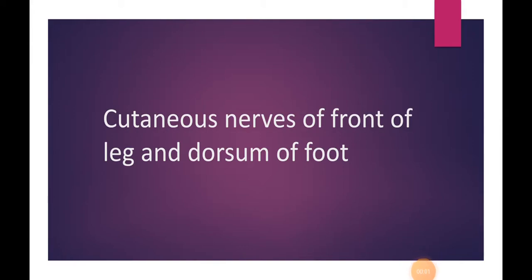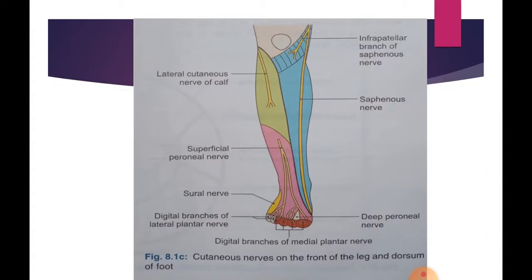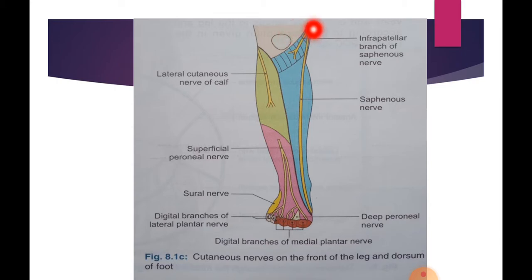Today's video is about the cutaneous nerves of the front of the leg and the dorsum of the foot. In this diagram we can see the cutaneous nerves. The first one is the infrapatellar branch of the saphenous nerve — it pierces the sartorius and the deep fascia on the medial side of the knee, then curves downwards and supplies the skin over the ligamentum patellae.